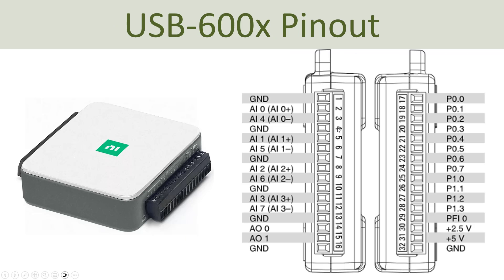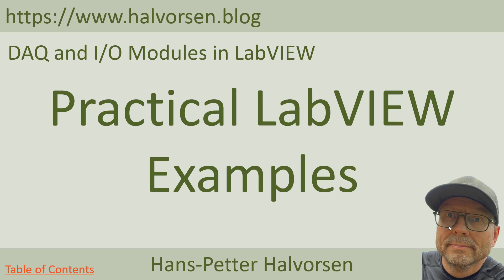Here you see an image with an overview of the different pins or connectors on the DAQ device. You have typically a connector on each side of the DAQ device. On one side you have analog pins - analog inputs here and analog output pins here. On the other side you have digital input and output pins. Typically you can choose if these digital pins should be an input or an output.